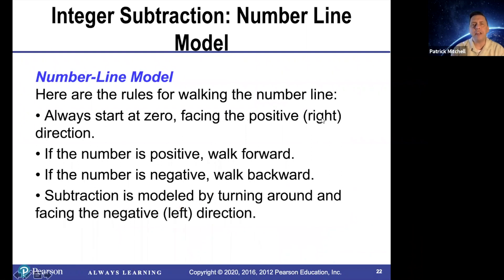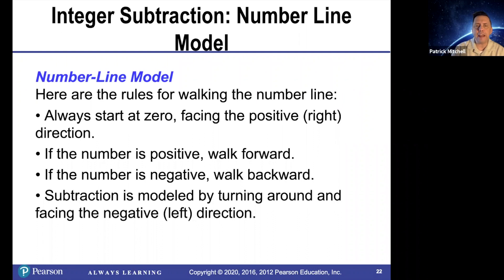The number line model for subtraction. Here are the rules for walking the number line when subtraction is involved: always start at zero, facing the positive direction. If the number is positive, walk forward. If the number is negative, walk backward. And if you happen to be doing subtraction, then before you walk forward or walk backward, turn around. Subtraction is modeled by turning around and facing in the negative direction.